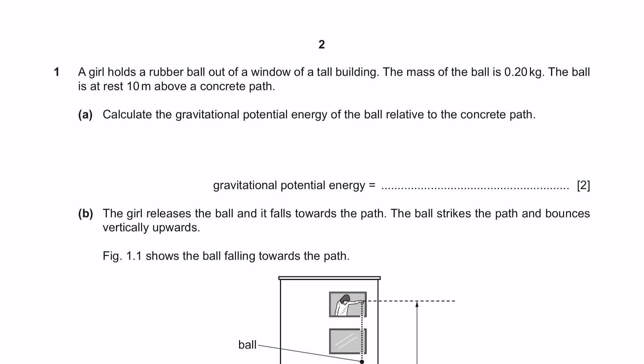Question 1. A girl holds a rubber ball out of a window of a tall building. The mass of the ball is 0.2 kilograms. The ball is at rest 10 meters above a concrete path. Question A: Calculate the gravitational potential energy of the ball relative to the concrete path.